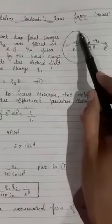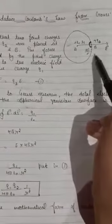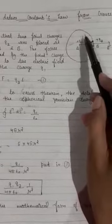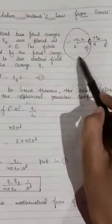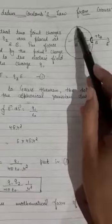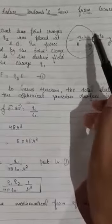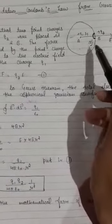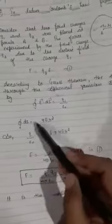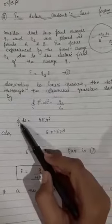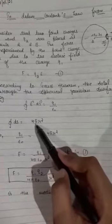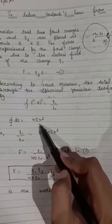Now you can see this thing: the Gaussian surface I have taken as a sphere, and the surface area for the sphere, if I want to calculate the total surface of this sphere, this will be 4πr². Same, I have taken the integration of this ds, means total surface area will be equals to 4πr².